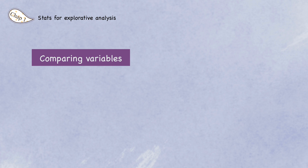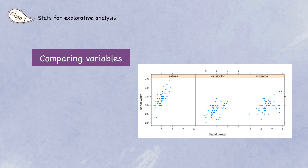What if you want to visualize more than two variables in one plot? In 2D space you can't do this directly, but you can create several plots showing the correlation between two variables colored or shaped by a third variable — that's how you can analyze three variables at once.